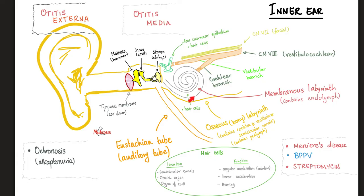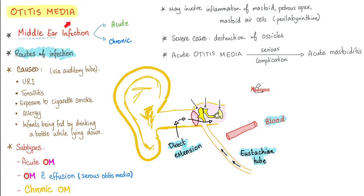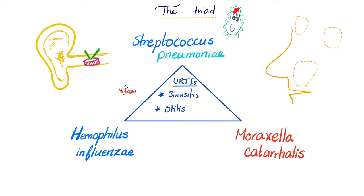After the middle ear, we have the inner ear. Types of otitis media include acute otitis media, otitis media with effusion, and chronic otitis media, which could be suppurative or non-suppurative. Suppuration means pus. What's the famous bacterial triad that causes otitis media? Streptococcus pneumoniae, Haemophilus influenzae, and Moraxella catarrhalis — the same triad that causes otitis media can also lead to sinusitis.